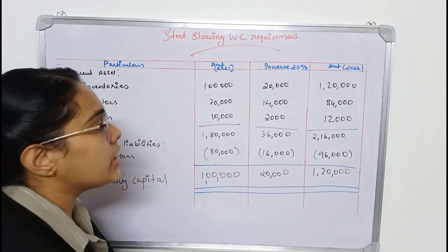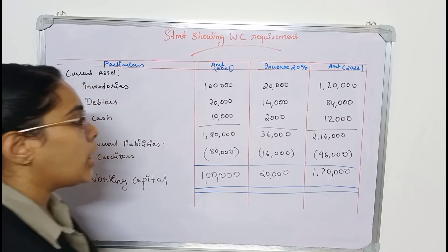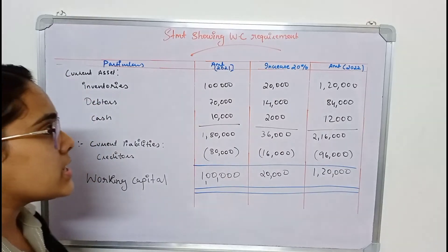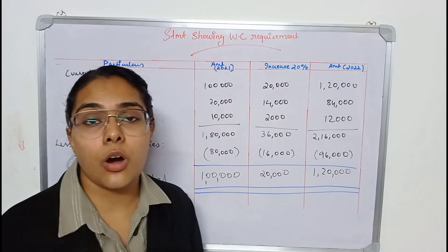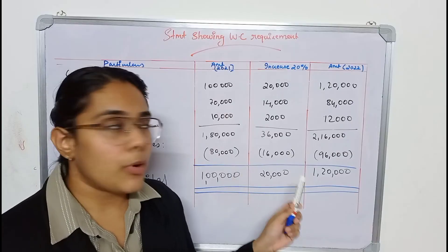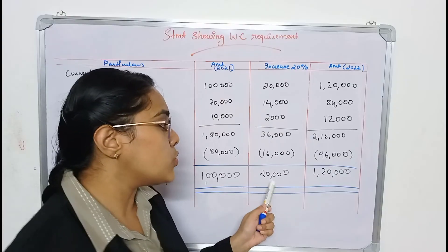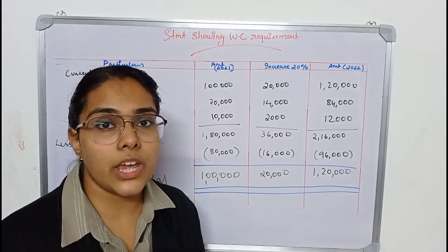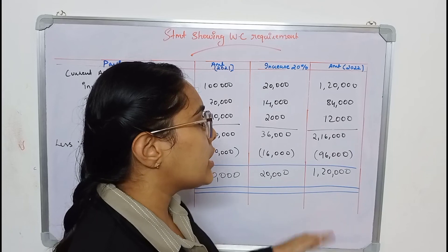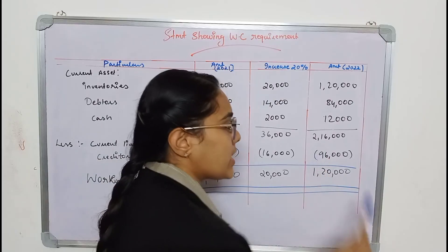Deducting current liabilities from current assets: in the previous year, 1,80,000 minus 80,000 gives working capital of 1,00,000. The increase column shows the working capital needs to be increased by 20,000. In the current year's column, 2,16,000 minus 96,000 gives a required working capital of 1,20,000.